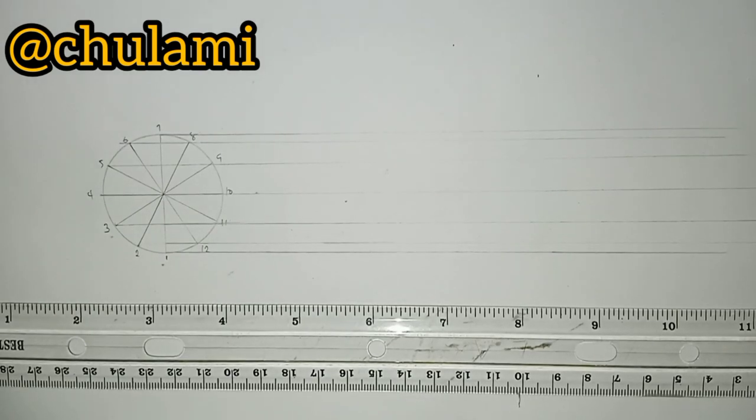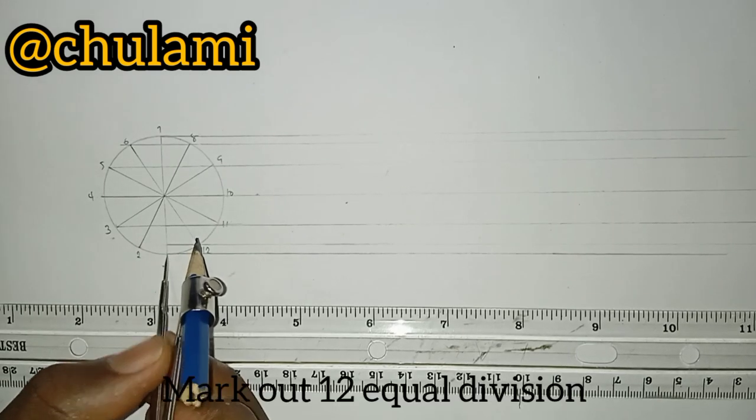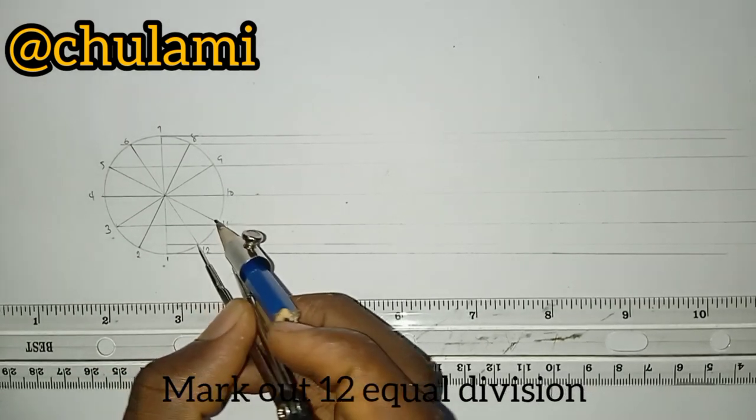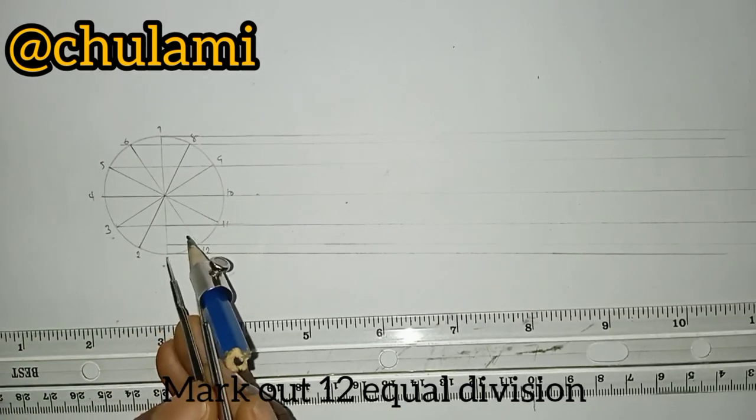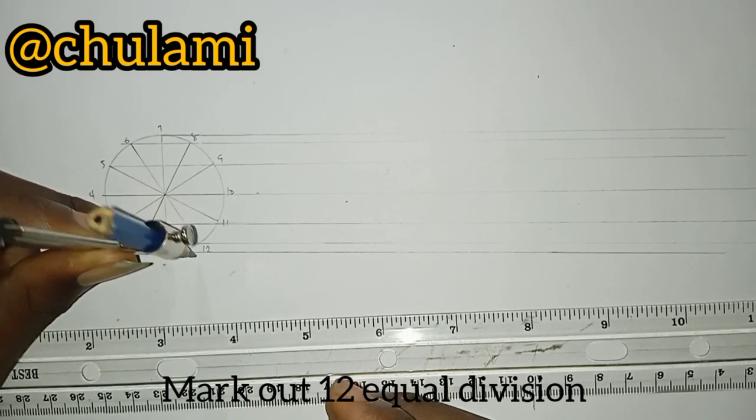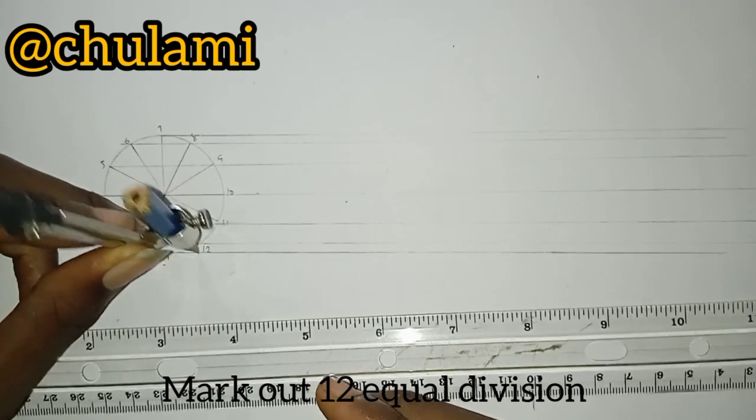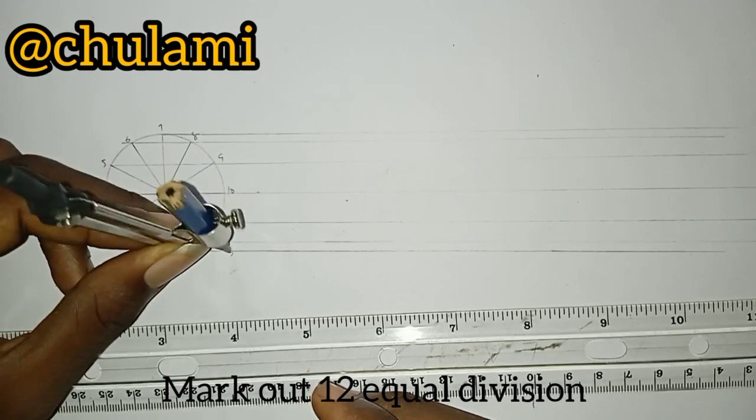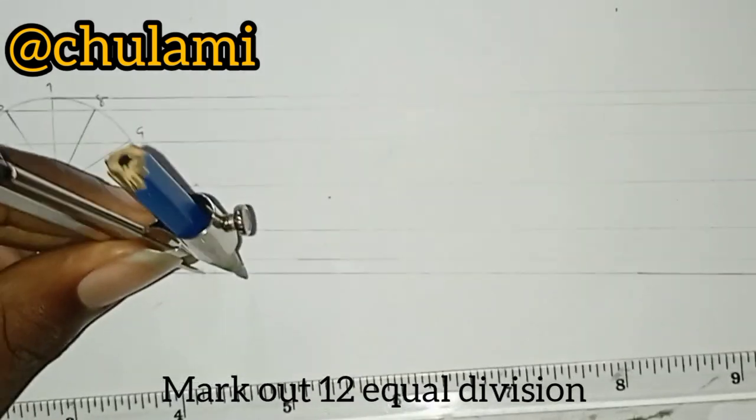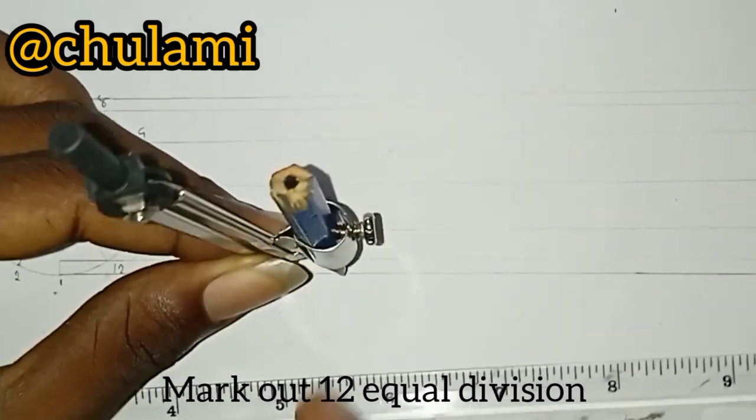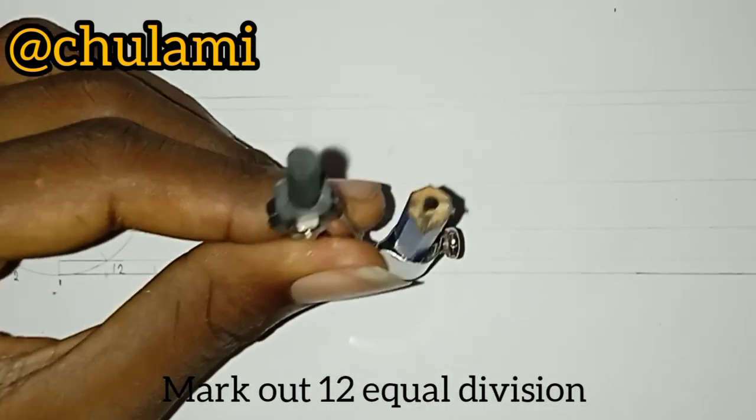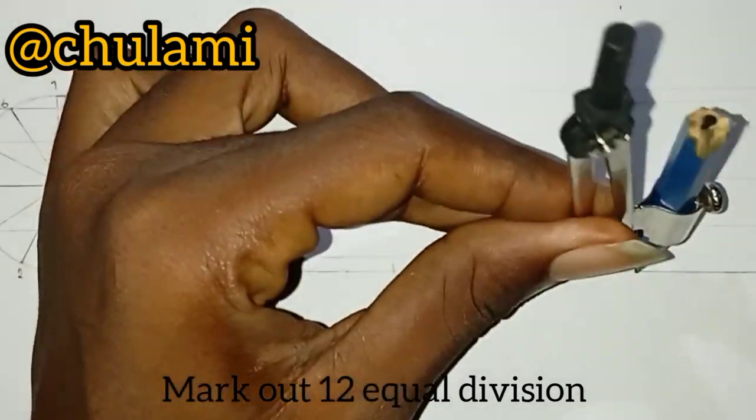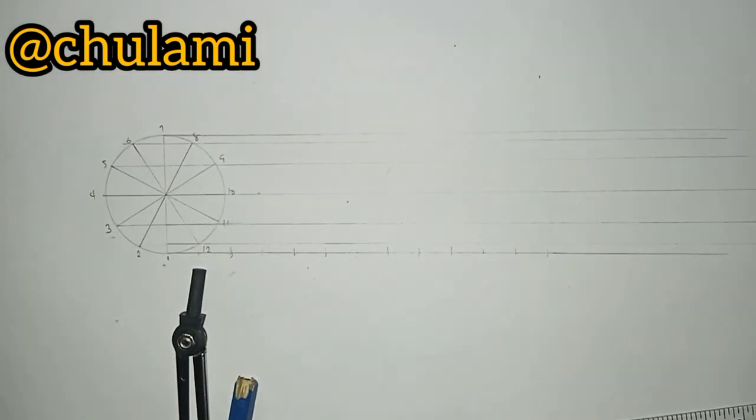Now get your compass and measure the distance from 1 to 12. It's the same measurement throughout. Once you get that measurement, put it at point 1 and cut an arc. You're going to make 12 equal divisions along this arc.